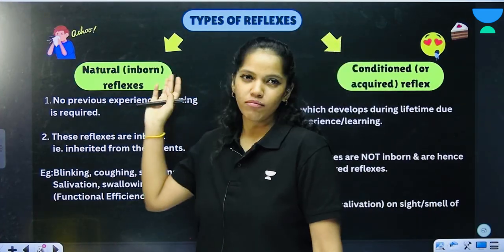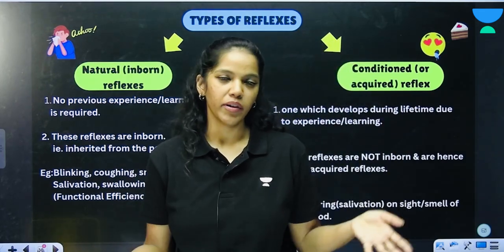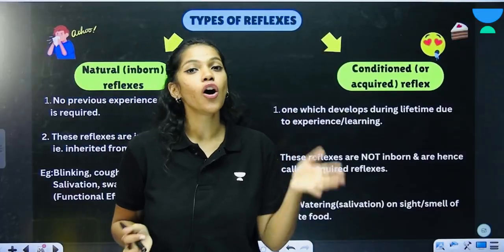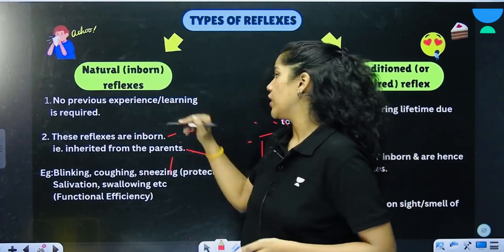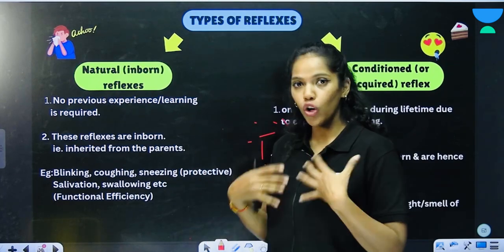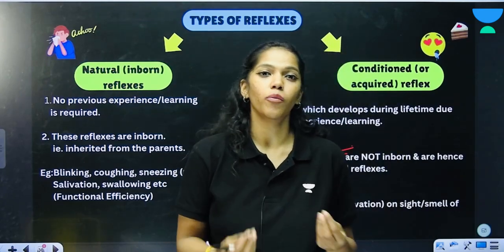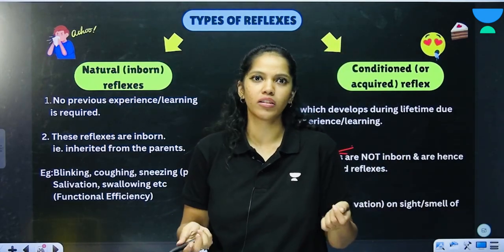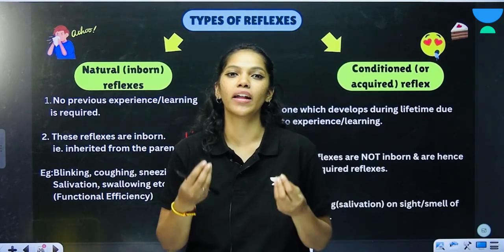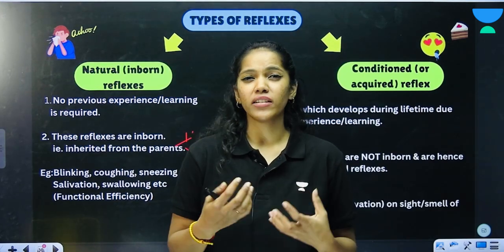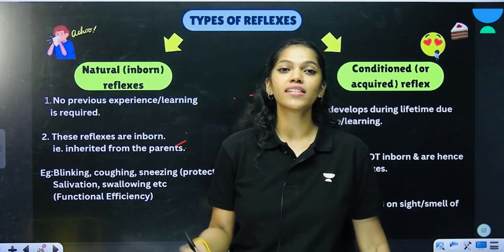The types of reflexes are: natural reflexes that are inborn — like a baby sneezing, which nobody taught it — and conditioned or acquired reflexes. Examples of inborn reflexes include sneezing, salivation, swallowing, blinking, and coughing, because nobody teaches you these; you are born with them. Natural inborn reflexes do not require any prior experience or previous learning.